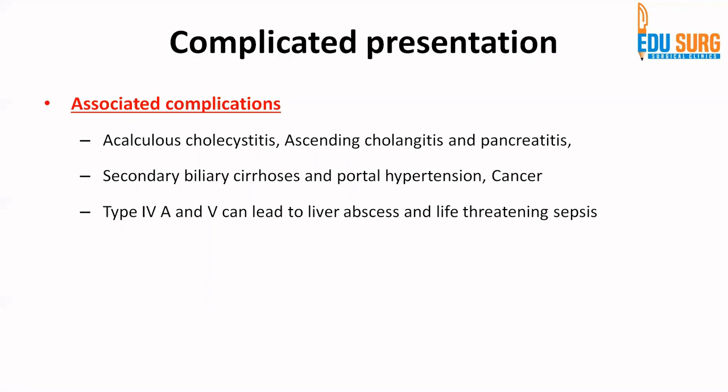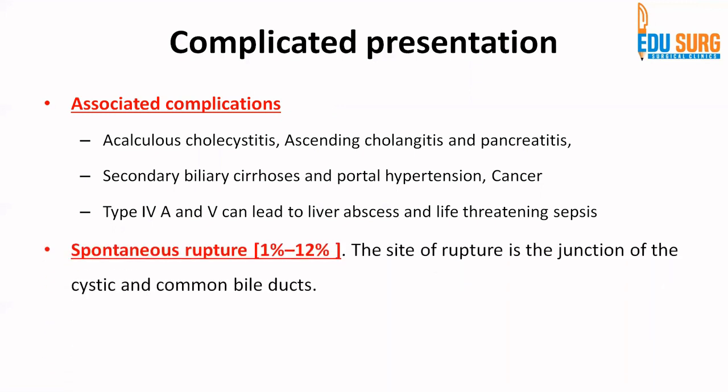A direct presentation of choledocal cyst can be end-stage liver disease, portal hypertension, or associated cancers. Type 4A and Type 5, which involve the intrahepatic biliary ducts, can lead to liver abscess and life-threatening sepsis. A very rare complication is spontaneous rupture, seen in 1% to 12% of cases, with the most common site being the junction of the cystic and common bile ducts — another important MCQ.